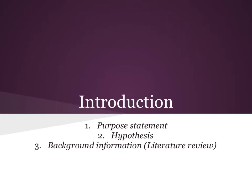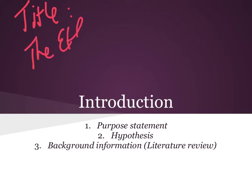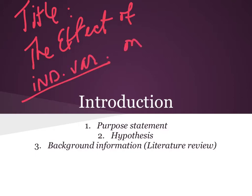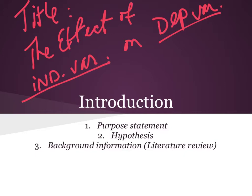Before we talk about the introduction, let's quickly talk about the title. Your title will start with 'The effect of,' followed by the name of the independent variable, 'on,' and then the name of the dependent variable. For example, it might be 'The effect of light intensity on the rate of photosynthesis,' or 'The effect of surface area on the rate of diffusion or osmosis.' Since most of our labs will be controlled experiments testing the effect of an independent variable on a dependent variable, this is the design your title should take.